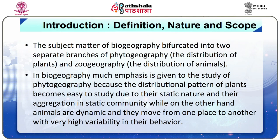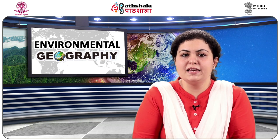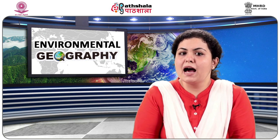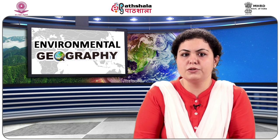The subject matter of biogeography has further been bifurcated into two separate branches: phytogeography, that is the distribution of plants, and zoogeography, that is the distribution of animals. In biogeography, much emphasis is given to the study of phytogeography because the distributional pattern of plants is easy to study due to their static nature and their aggregation in static communities, while animals are dynamic and move from one place to another with high variability in their behaviour. Some believe that biogeography is a part of physical geography as it is often related to the examination of physical environment and how it affects species and shapes their distribution across space.